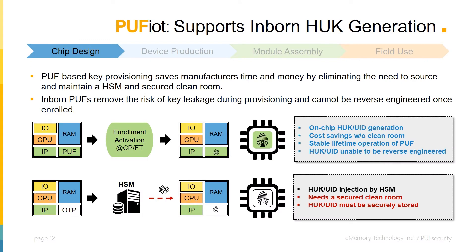We start at the beginning of the supply chain, at the initial stage of a product's life cycle, where the decision is made if a hardware-unique key needs to be provided for each device, and if so, whether internal or external key provisioning will be used. The bottom row shows the traditional external method of key provisioning, using a hardware-secure module and secured cleanroom environment. The top row shows the internal method, using an onboard PUF to generate a unique identifier for each device. The two main benefits of using a PUF are on-chip key generation with no chance of key leakage, and cost savings from not having to maintain a secured cleanroom environment for key injection.